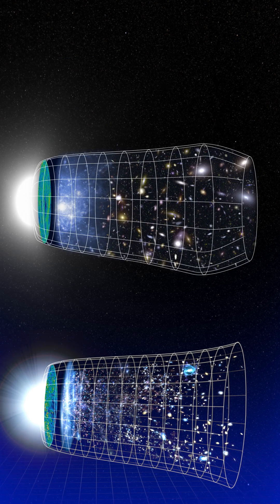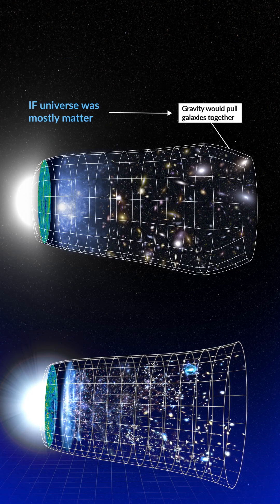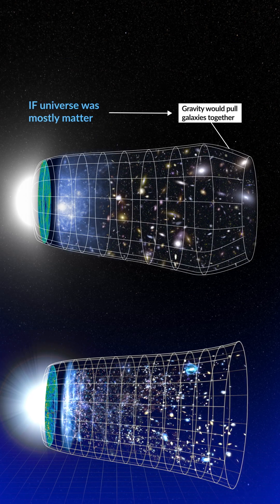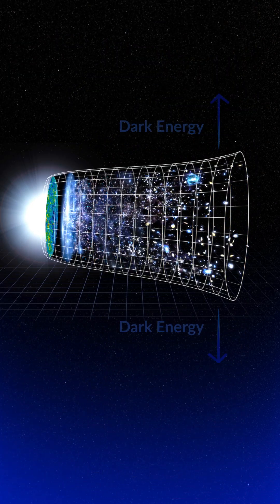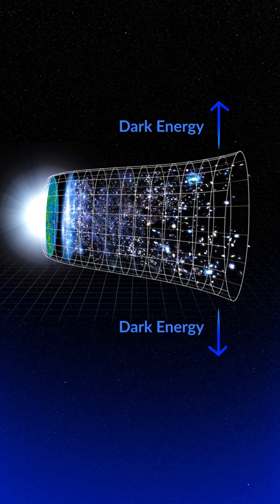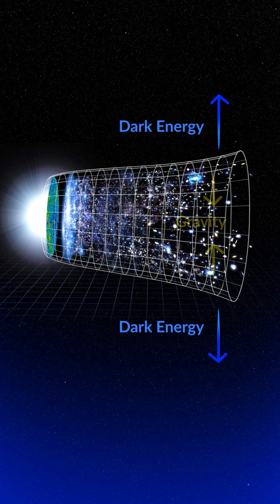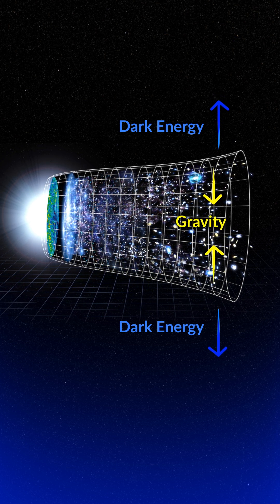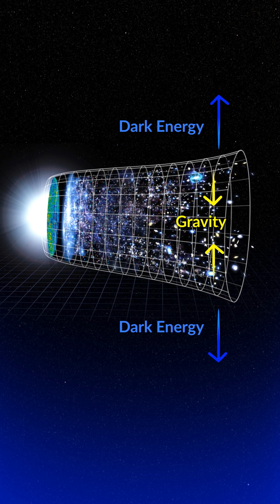If the universe was mostly made of matter, gravity would pull all of the galaxies together and slow down the expansion of the universe. But the accelerating expansion of the universe points to the existence of a mysterious energy, which we call dark energy, that counters gravity.